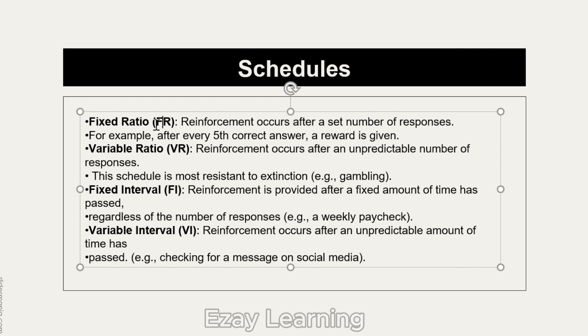There are four types of intermittent reinforcement schedules: fixed ratio, variable ratio, fixed interval, and variable interval. Ratio is related to responses; interval is related to time. Fixed means after a set number, and variable means an unpredictable number. Fixed ratio (FR) means reinforcement is given after a set number of responses — for example, FR5 means reinforcement after every five correct responses.